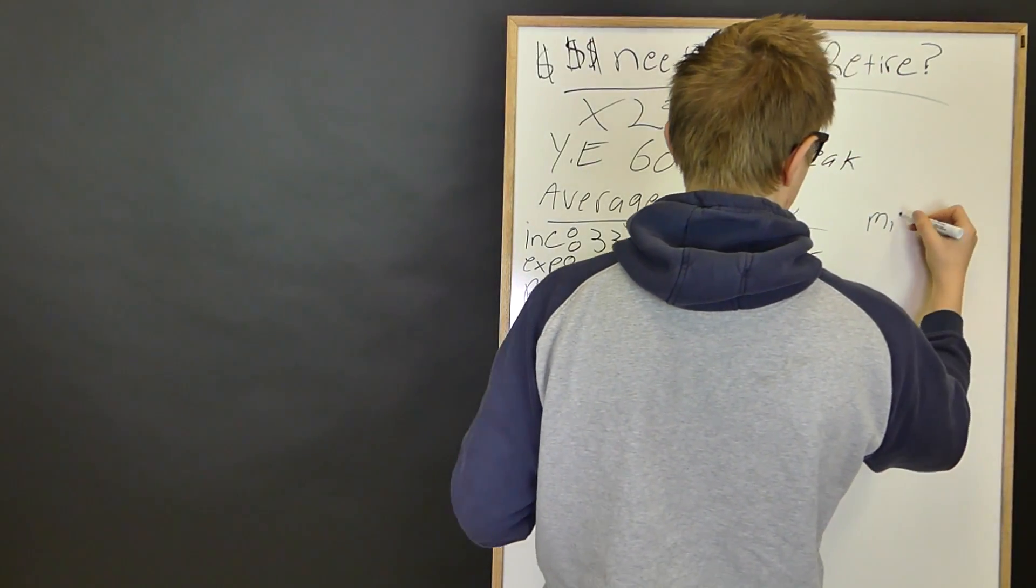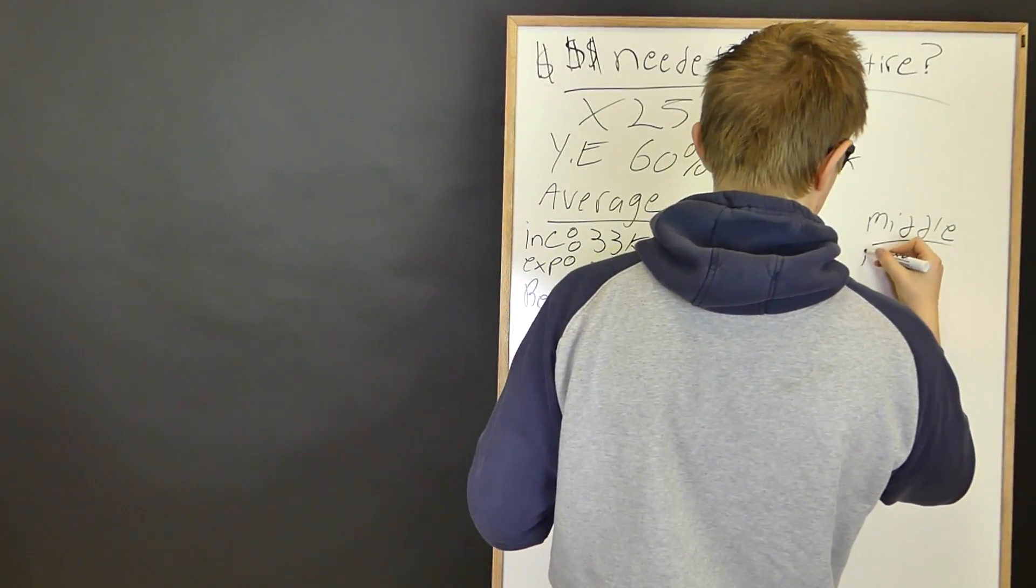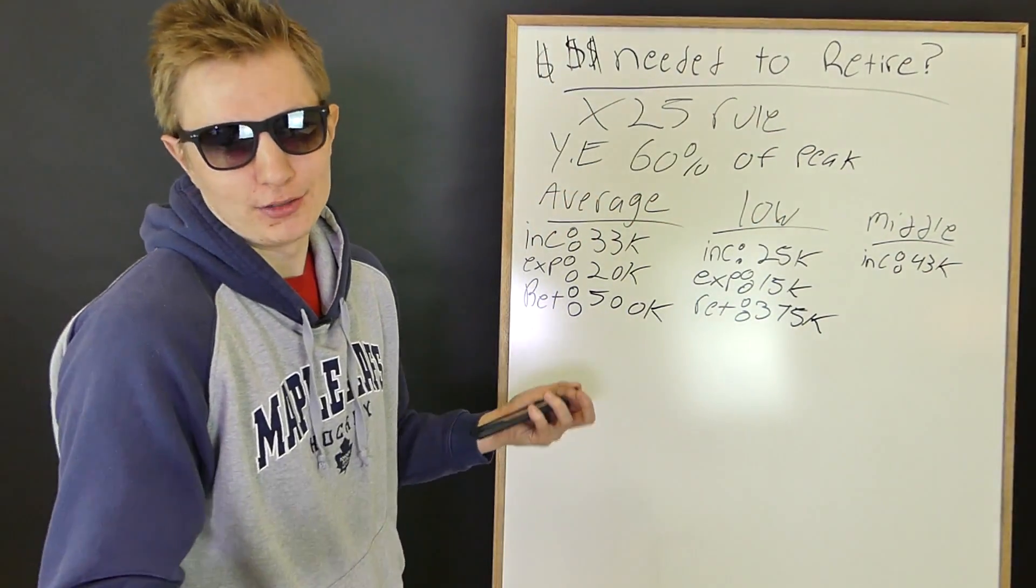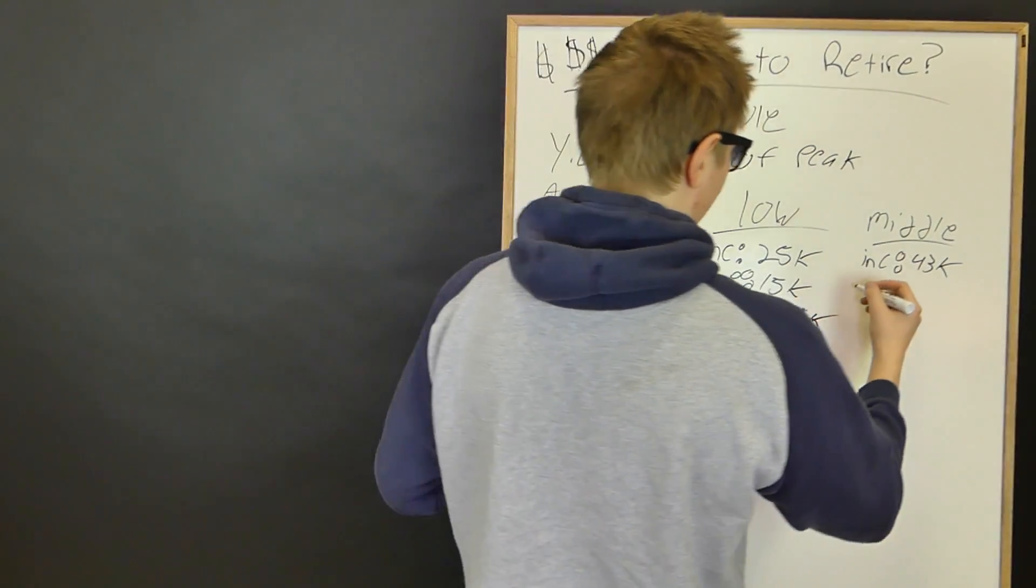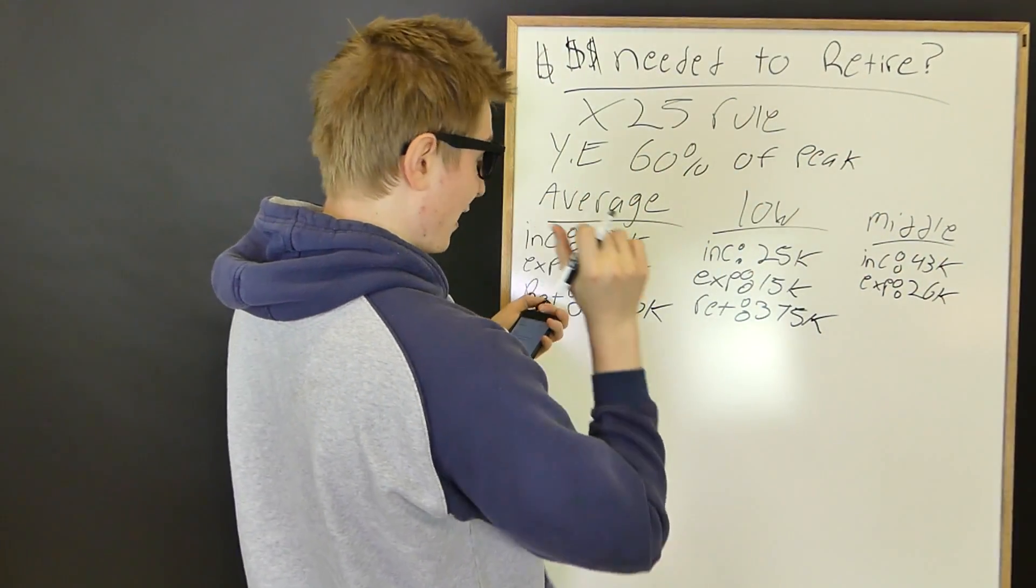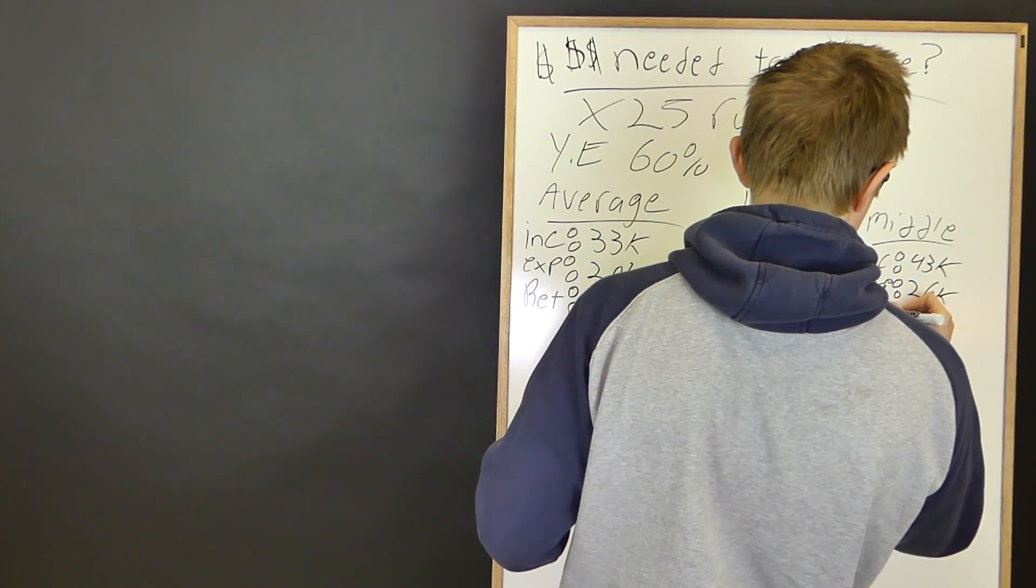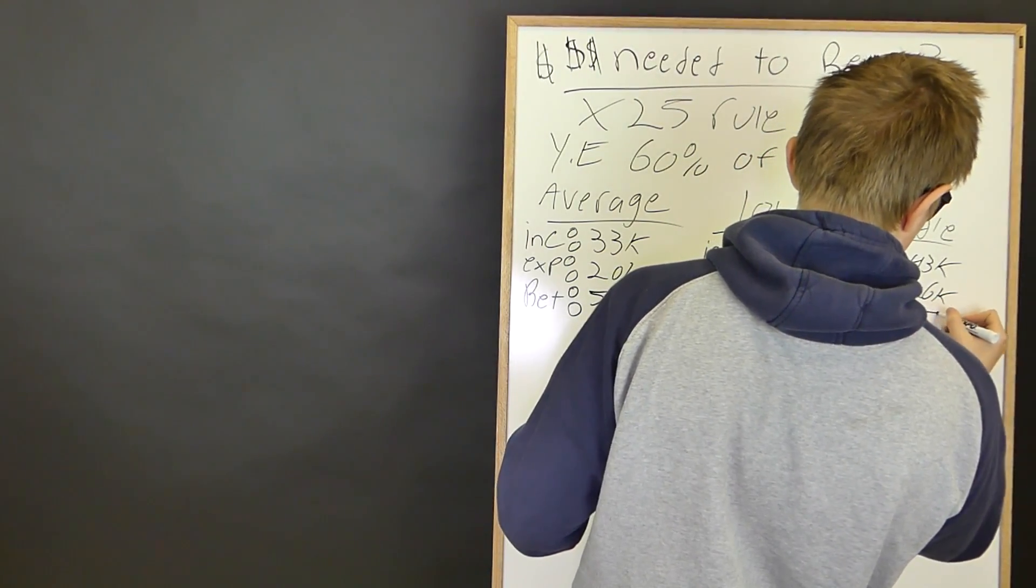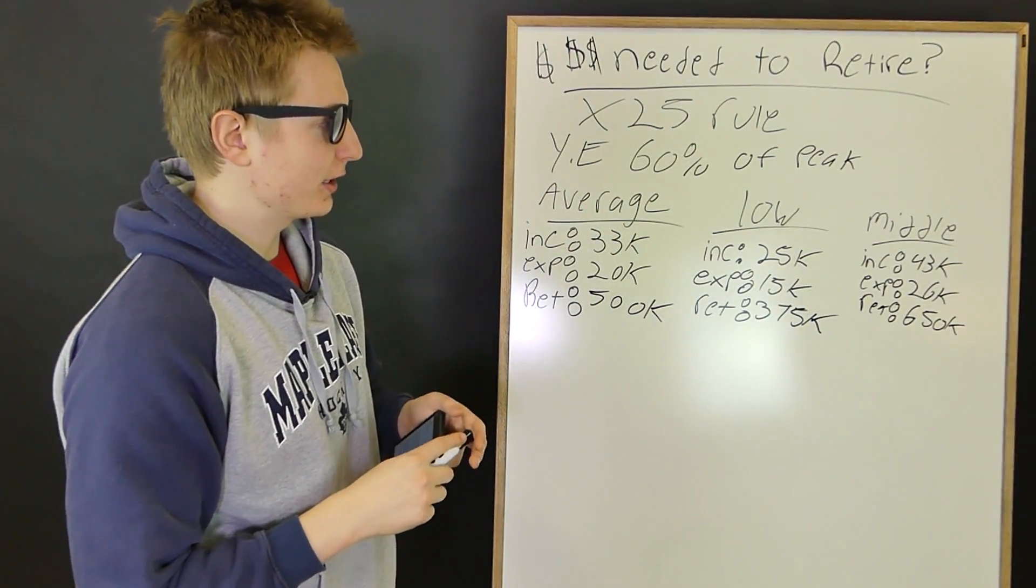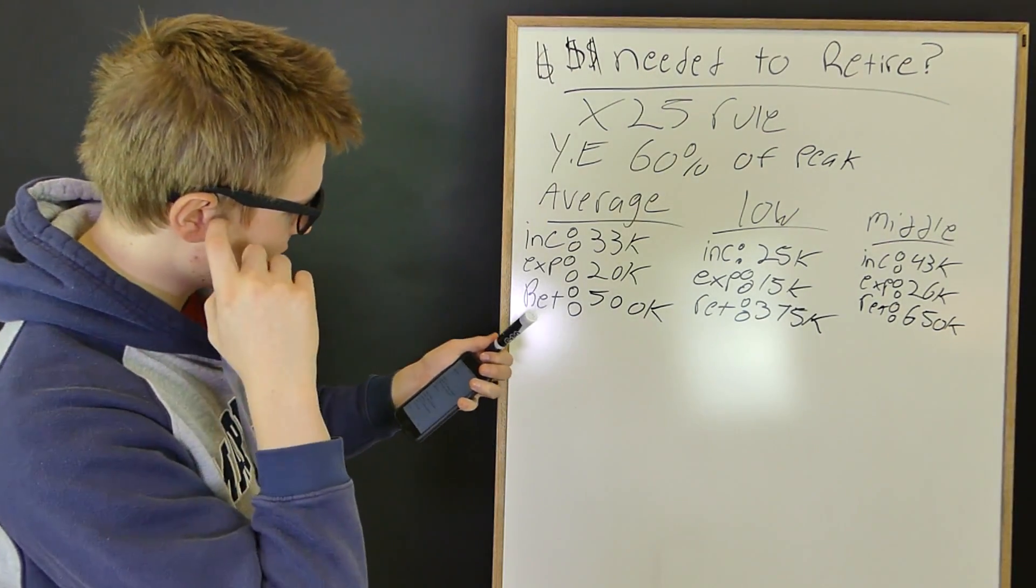Now, we're going to move on here to middle income. So this is someone who makes, let's see here, their income would be about $43,000, which is, that's okay. That's middle. You're middle class if you make $43,000. Your expenses are around $26,000, I think. Meaning that after the times 25 rule, after you multiply that by 25, your retirement would have to be roughly $650,000. Which is, again, saying that $650,000, you're only going to have to save up about $300,000 in your lifetime, or $300,000 to $400,000. And hopefully the investments will add up the difference there.